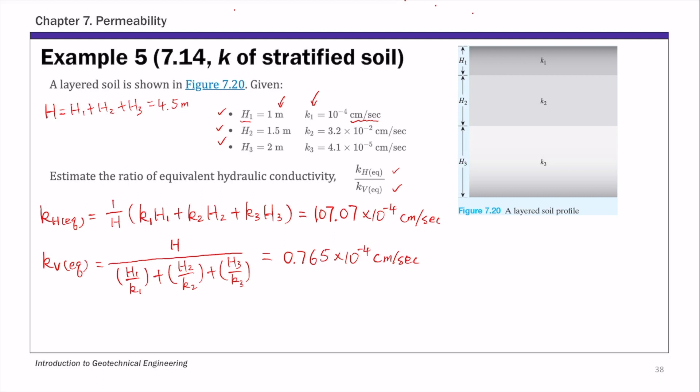And once you have these two equivalent k values, the ratio kh_eq over kv_eq, if you substitute both numbers, 1.707 times 10 to negative 4 over 0.765 times 10 to negative 4, that ratio is approximately 140.